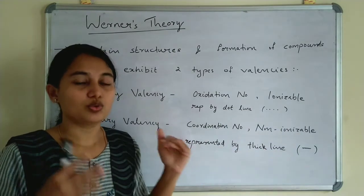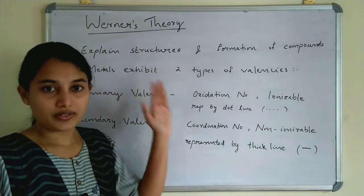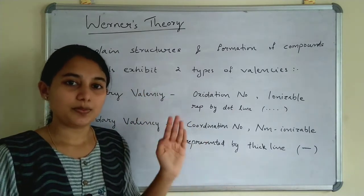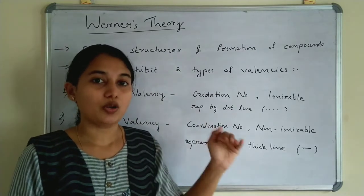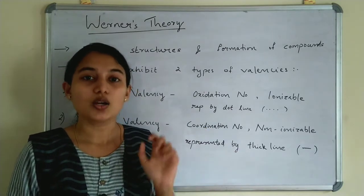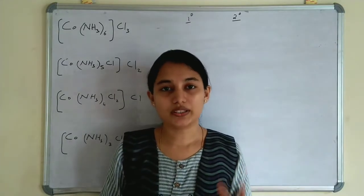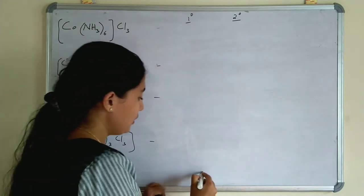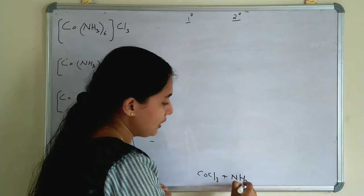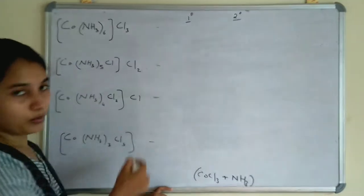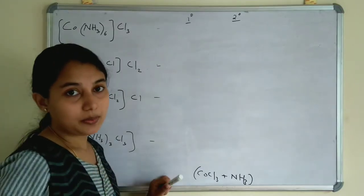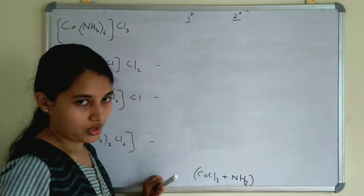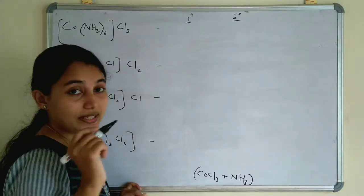We will see an example so you will understand better. Werner's theory says that metals exhibit two types of valency: primary valency and secondary valency. Now we will see how to identify the primary valency and secondary valency in a coordination compound. The reaction conducted by Werner was CoCl₃ plus excess ammonia. He added ammonia to CoCl₃ and got these compounds. The primary valency represents the oxidation number of CoCl₃, so first we find out the oxidation number of CoCl₃.